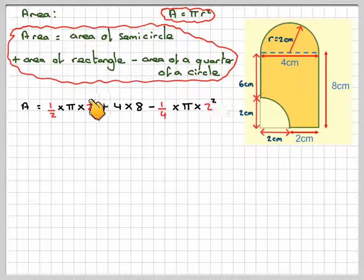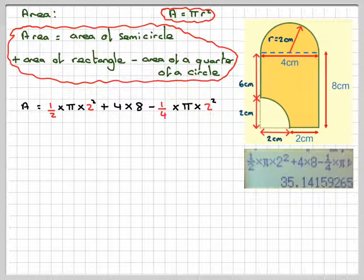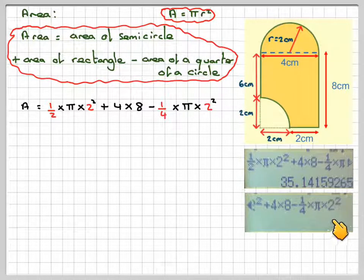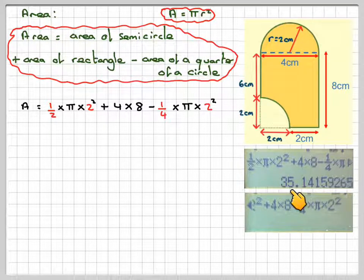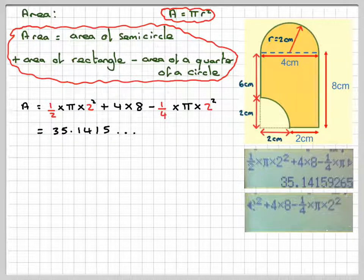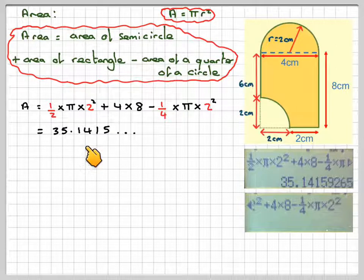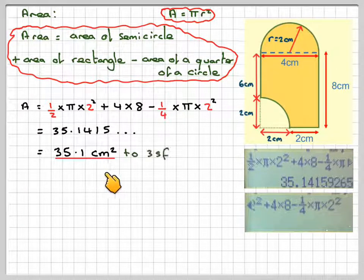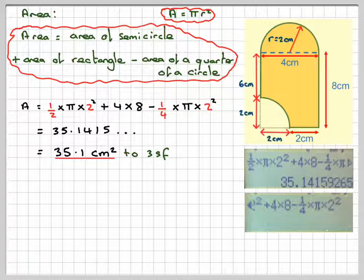Now, you can enter all this in one go on the calculator. So it's 1/2 × π × 2², plus 4 × 8, minus 1/4 × π × 2². It gives an answer of 35.141. And we need to round that off to three significant figures, so it becomes 35.1 centimetres squared to three significant figures.